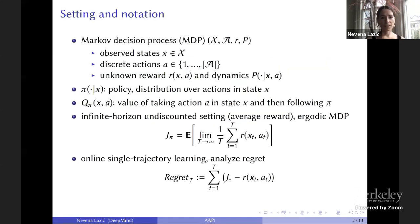The setting is learning in Markov decision processes with observed states x, discrete actions a, unknown reward function r, and unknown dynamics. Pi will denote a stochastic policy, Q pi the action value of policy pi. We'll be in the infinite horizon undiscounted setting, where the goal is to find a policy that maximizes the average reward. We assume the MDP is ergodic, so everything is well defined. The learning protocol is online single trajectory learning, where we compare algorithms in terms of their regret, defined as the difference between the average reward of the optimal policy and the rewards accumulated by the algorithm.